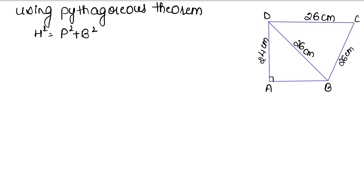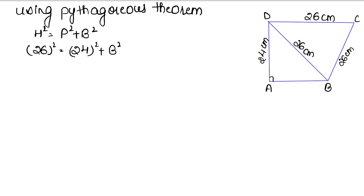Now we look at this right triangle. Our perpendicular is 24 cm and our hypotenuse is 26 cm. So, 26 squared equals 24 squared plus B squared.